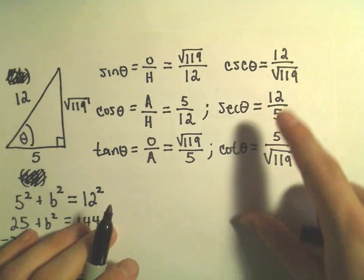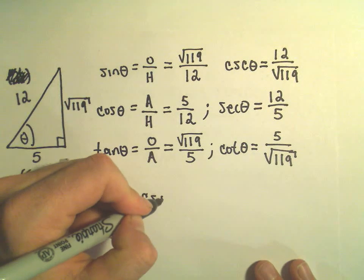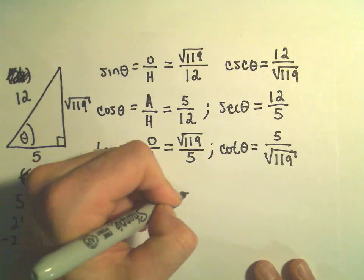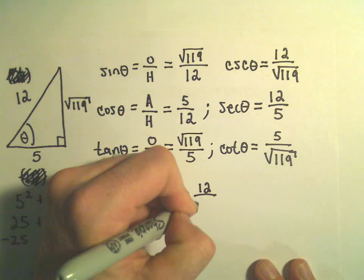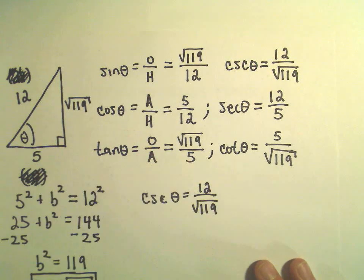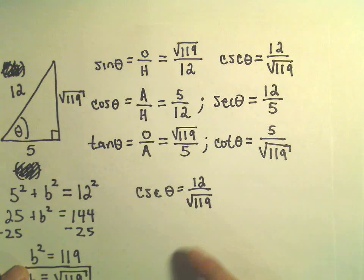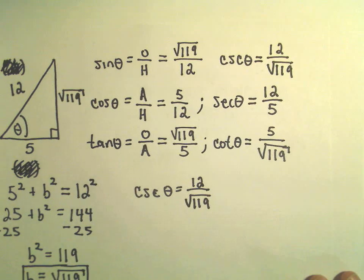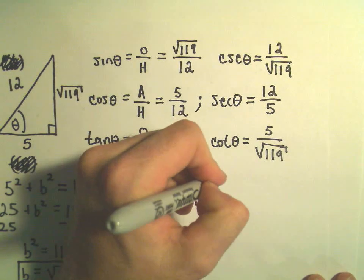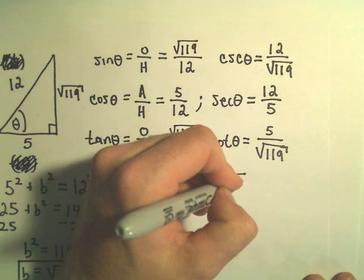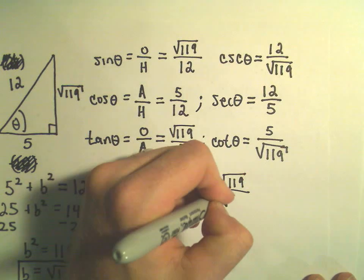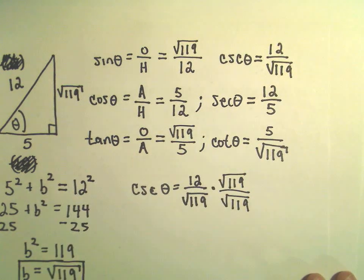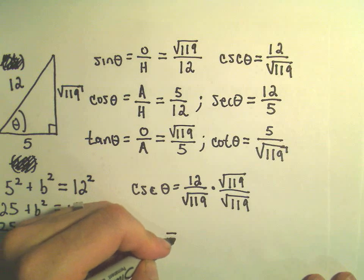One little remark, maybe we'll pick on cosecant of theta here. So cosecant of theta is 12 over the square root of 119. Some people don't like to see roots in the bottom of a fraction in the denominator. So we could always rationalize the denominator by multiplying the numerator and the denominator by the square root of 119.